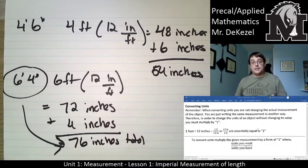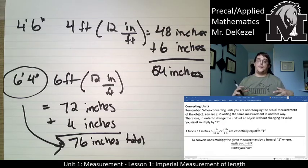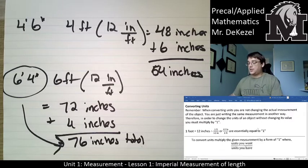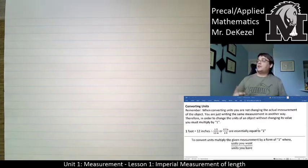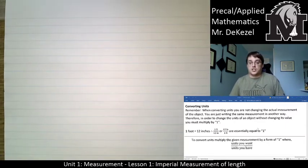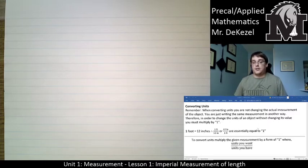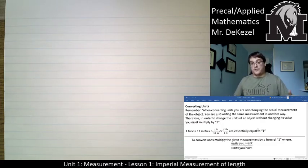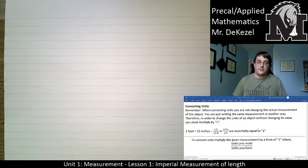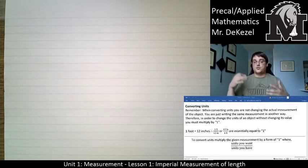Next we're going to develop a rule that we can always use to convert units. When you convert units, you're not changing the actual measurement — you're just writing the same measurement in another way. Therefore, in order to change the units of an object without changing its value, you have to multiply by one. This is just a fancy way of saying you're also dividing by one — it doesn't change the value, but it helps with the units. So you can say one foot over 12 inches, or 12 inches over one foot.